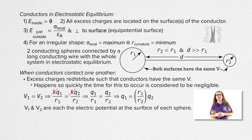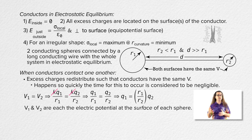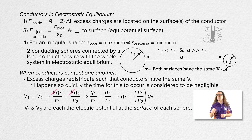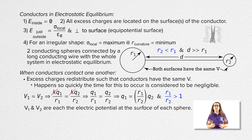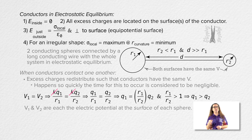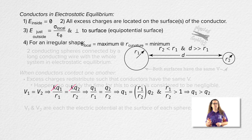We can then rearrange the equation to get the charge on sphere 1 equals the ratio of the radii of the two spheres, r1 over r2, times the charge on sphere 2. Because radius 2 is less than radius 1, radius 1 divided by radius 2 is greater than 1. That means the excess charge on sphere 1 is greater than the excess charge on sphere 2.